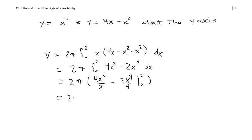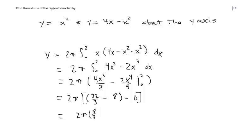When we evaluate, we have 2π times: plugging in 2, we get 2 cubed is 8, times 4 is 32, divided by 3, minus 2 to the fourth is 16, times 2 is 32, divided by 4 is 8. When we plug in 0, we get 0. Subtracting 32/3 minus 8 gives us 8/3. So we have 2π times 8/3, leaving our answer as 16π/3 units cubed.